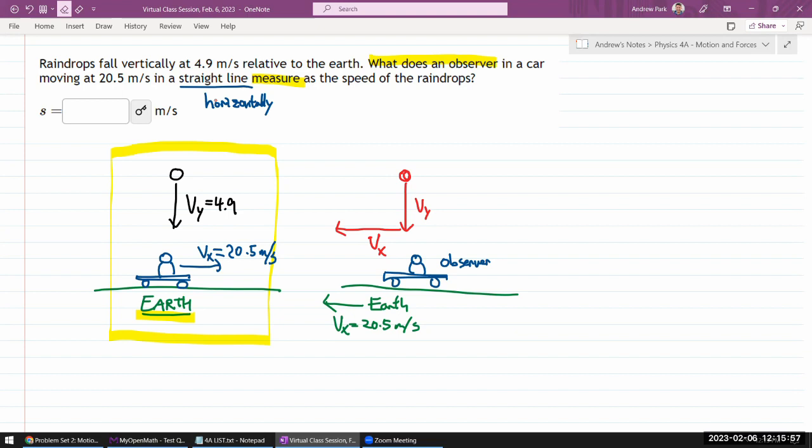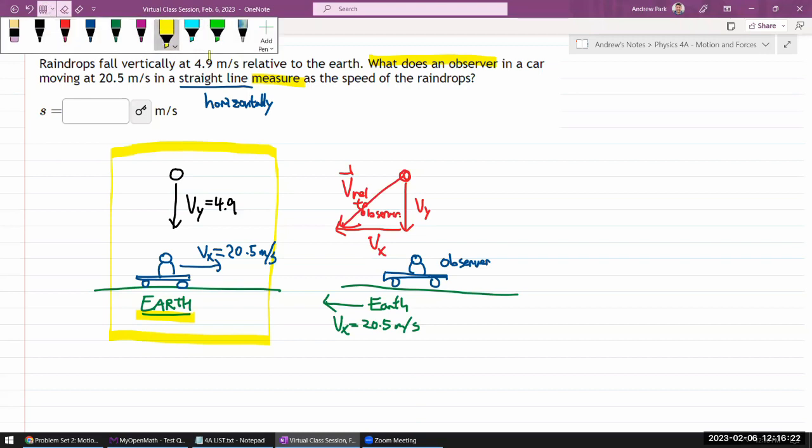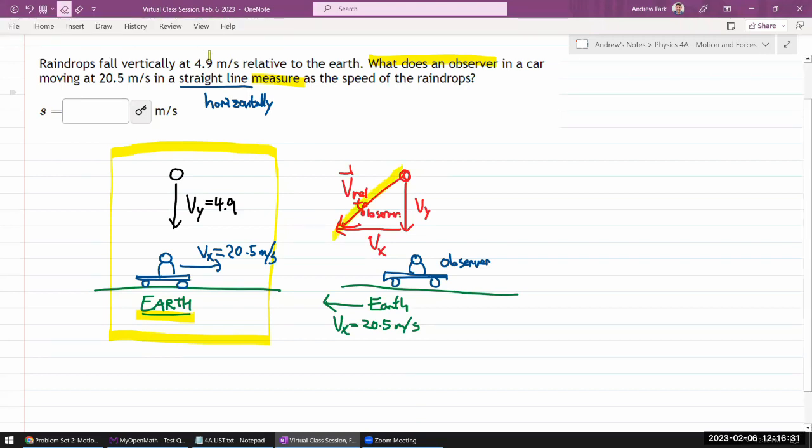So in the observer's reference frame, the velocity of the raindrop relative to the observer will look something like this. This will be velocity of the raindrop relative to observer. So it asks, what is the speed of the raindrop? Oh, so it's just asking for the magnitude of this vector, relative velocity.